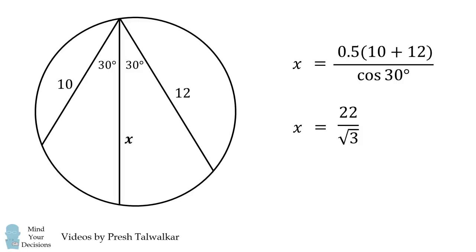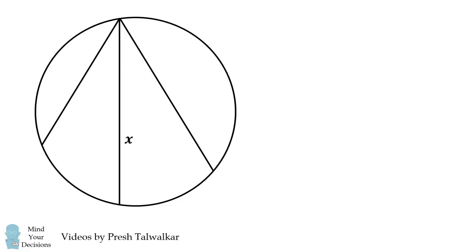In fact, we can generalize this formula. Suppose we have a valid diagram with chords of a and b, and this angle is equal to theta. You can actually prove, using the same method in this video, that x is equal to the simple average of a and b divided by the cosine of theta.